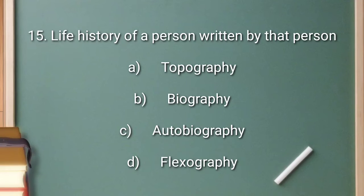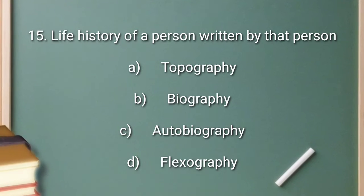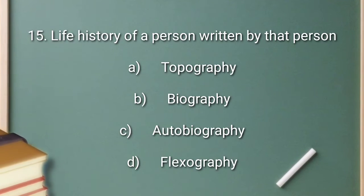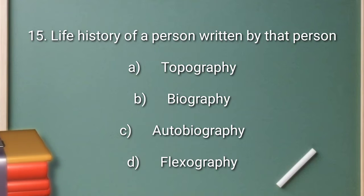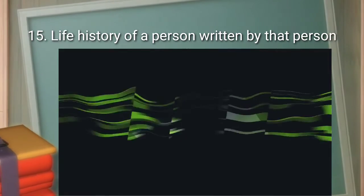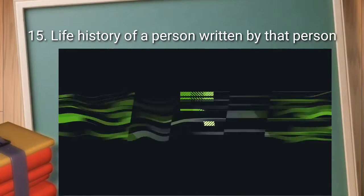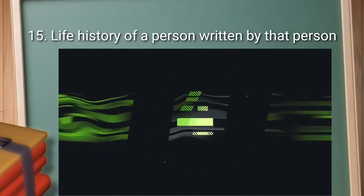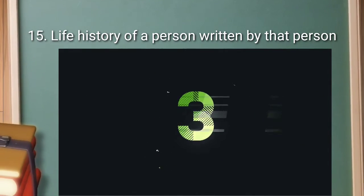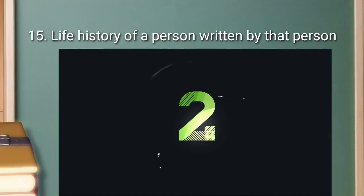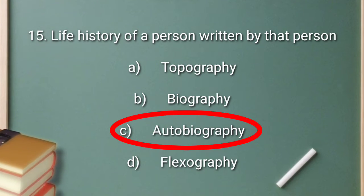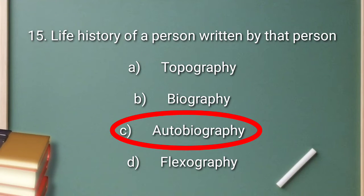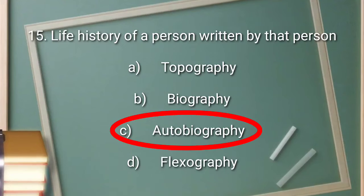Question number 15: life history of a person written by that person. Option A: topography. Option B: biography. Option C: autobiography. Option D: flexography. The right answer is option C: autobiography.